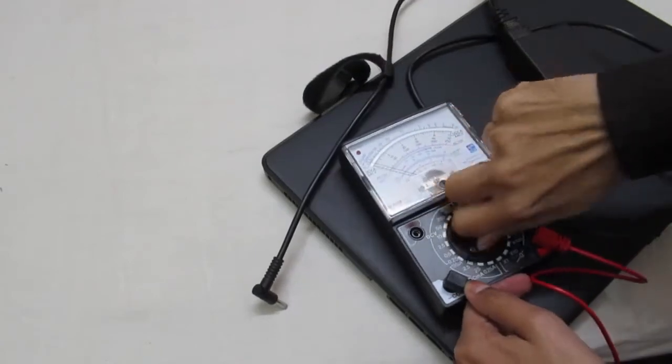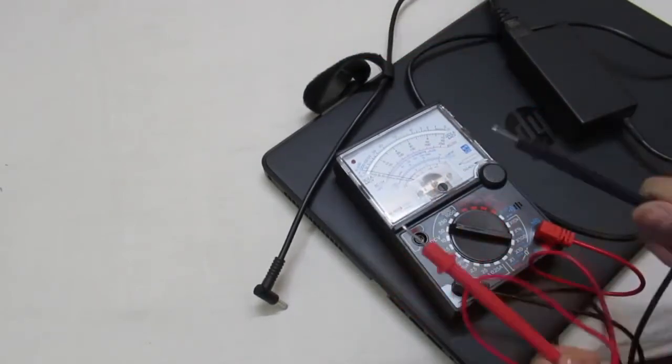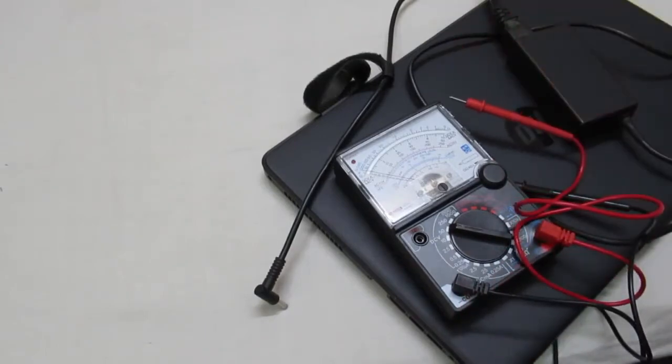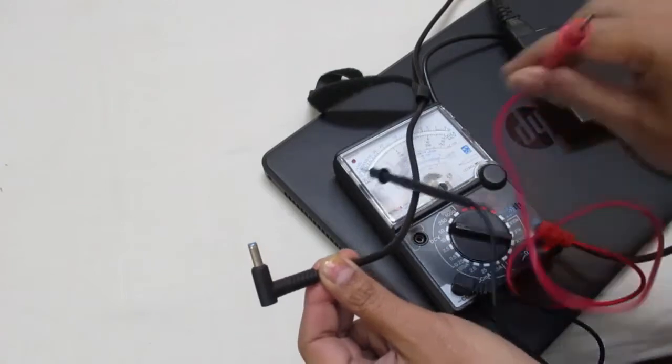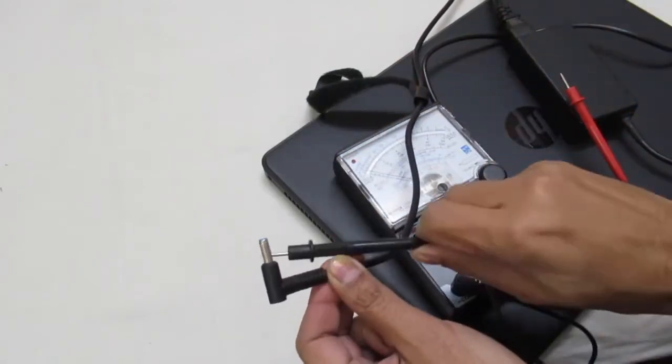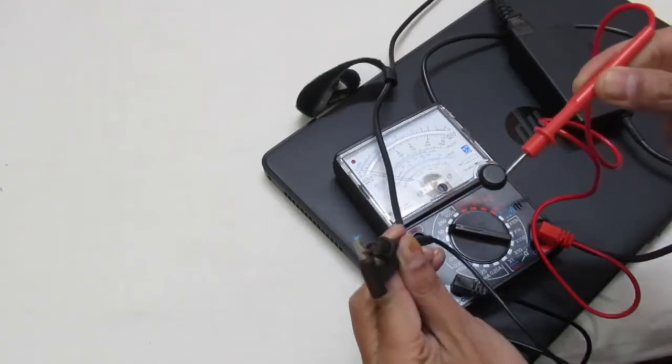Now connect this cord to the charger adapter and set your multimeter to check DC voltage, which is 19.5 volts. That is written on the charging adapter as you can see. Now let's check.